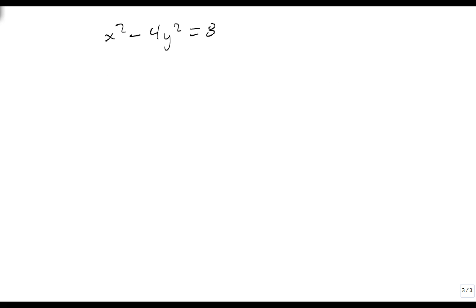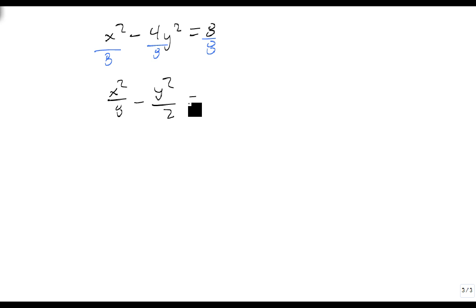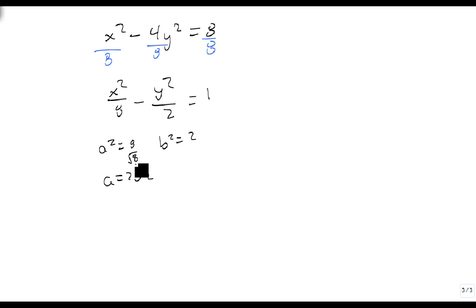Let's look at another one: x squared minus 4y squared equals 8. Again, we need to divide by 8 to get x squared over 8 minus y squared over 2 equals 1. In this case, a squared is 8 and b squared is 2, so a is equal to 2 square roots of 2 — which is the square root of 8 simplified — and b is just the square root of 2.